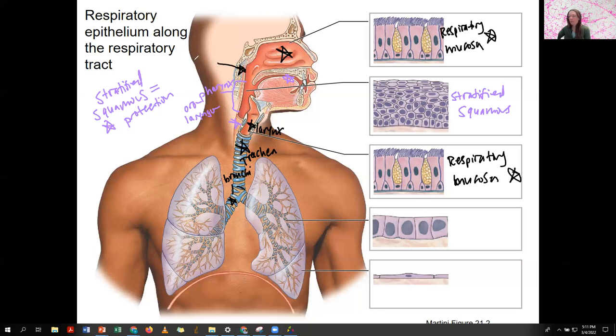Unless you're snorting up milk, which your body is not actually designed to do, believe it or not, food should not be going through there. So if food goes through, it's stratified squamous. If just air goes through, it's respiratory mucosa.